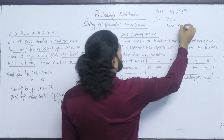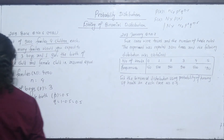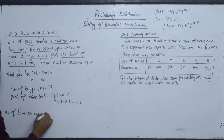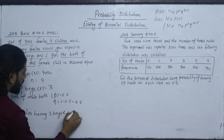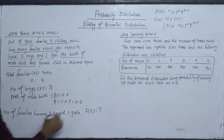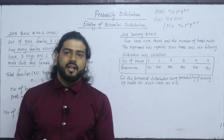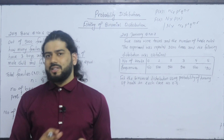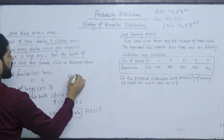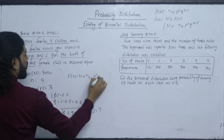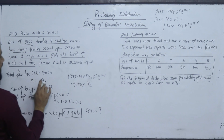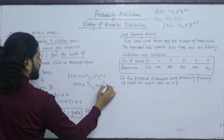N into nCr, P to the power R, Q to the power N minus R. Now, how many families? Number of families having three boys and one girl. We apply F(R) equals N into nCr into P to the power R into Q to the power N minus R, where N equals 9000, n equals 4, R equals 3.